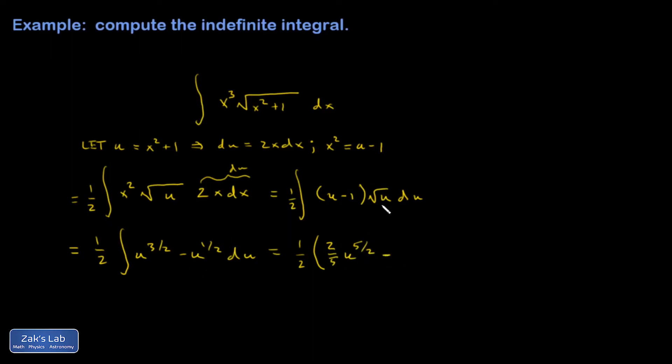Second term gives me u to the three halves divided by three halves, which is the same as multiplying by two thirds.